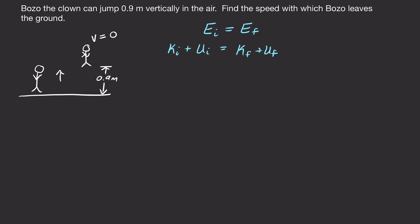Now if I fill these in, our formula for kinetic energy is one-half mv squared, so initial kinetic energy will depend on the initial velocity. The only type of potential energy we might have is gravitational potential energy, given by mass times gravitational acceleration times height — in this case, our initial height. We'll let y equals zero be the ground.